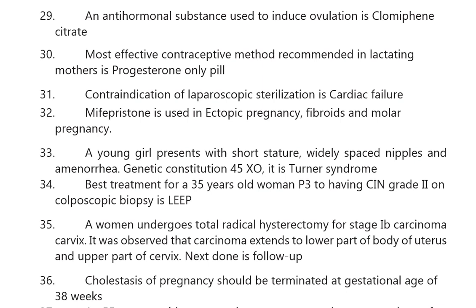A young girl presenting with short stature, widely spaced nipples, and amenorrhea has a genetic constitution of 45,X0 — that is Turner syndrome.